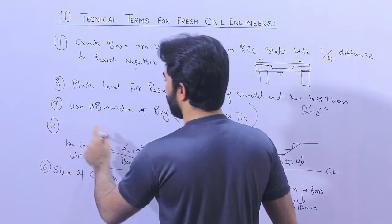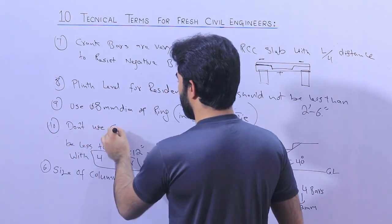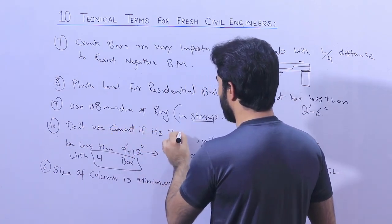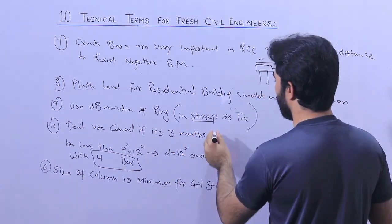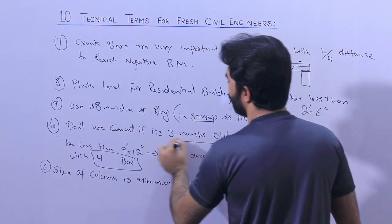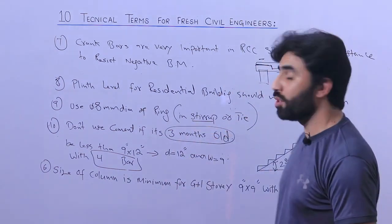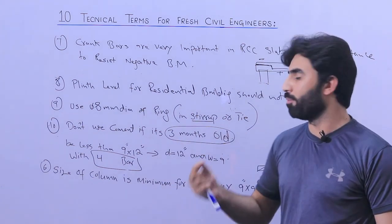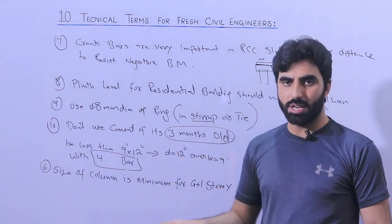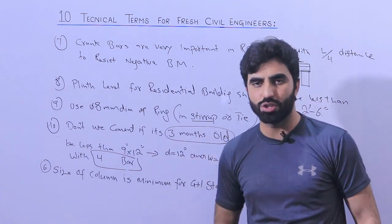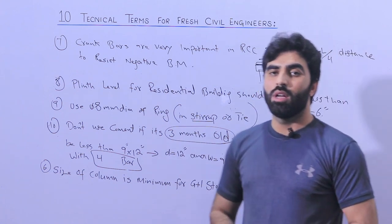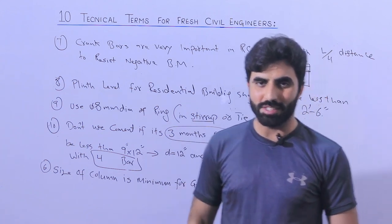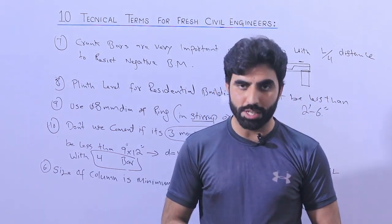The tenth and final term is about cement expiry. If cement is more than three months old, do not use it. Within three months you can use the cement, because the final expiry is three months. If you use cement after three months, you will not get full strength and you will face more problems. This concludes the 10 technical terms. Thanks for watching, see you in the next video, goodbye.